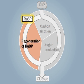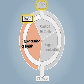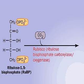Keep in mind that the Calvin cycle requires six CO2s and six RUBPs for each turn. Let's look more closely at the reactions involved, starting with carbon fixation.